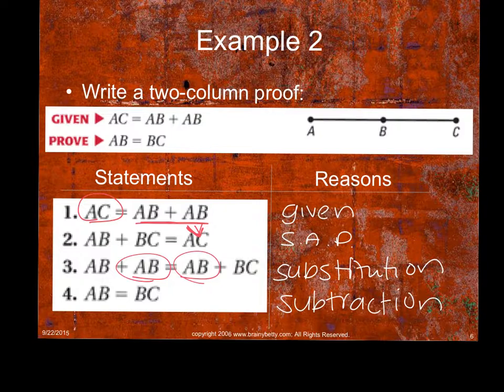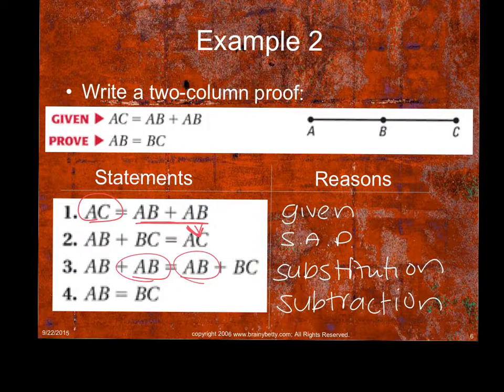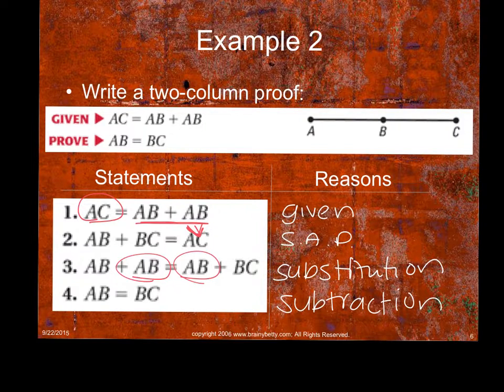So again, you always want to start out by looking at your initial figure, right? It said that AC equals AB plus AB, so it would be a double of that AB length. And does AB equal BC? Well, from the picture, we know AB would equal AB. I mean, sorry, AC would be AB plus BC. So if those two are the same, then I can use the subtraction property to take it apart. Still good?